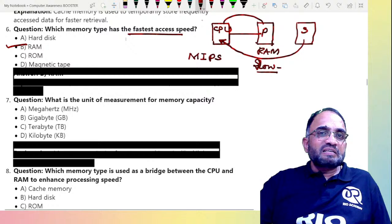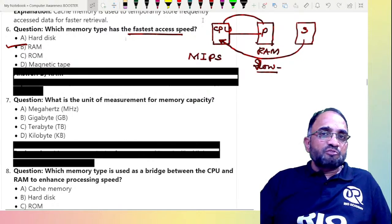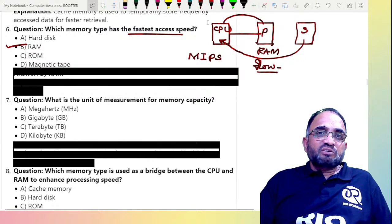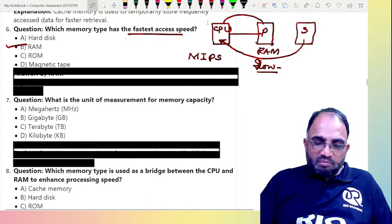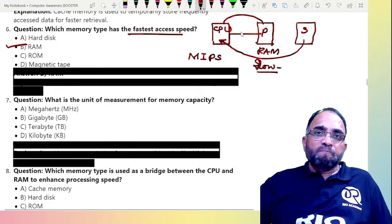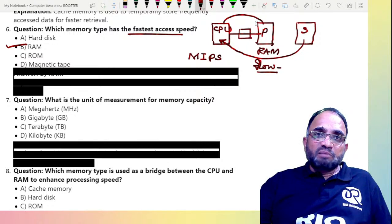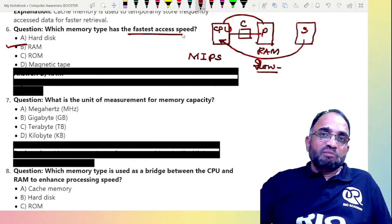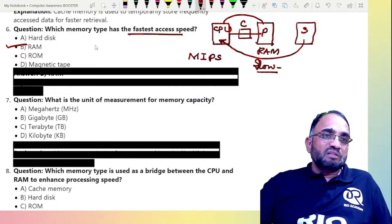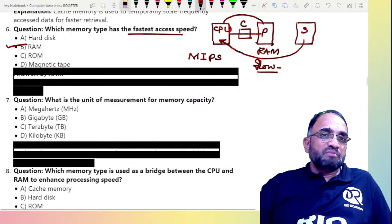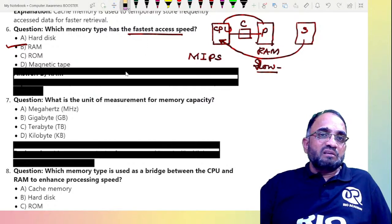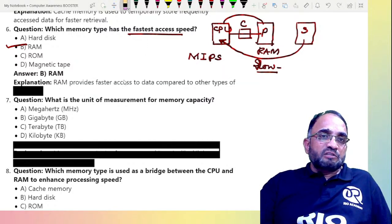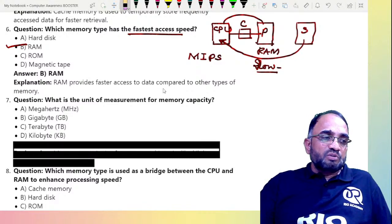Primary memory, which is RAM, is compatible with the CPU's speed, and that is the reason it is the fastest accessing memory. If cache memory were placed between the primary memory and the CPU, cache would be the fastest — but cache is not in this list. So RAM is the fastest accessing memory, providing faster access to data.